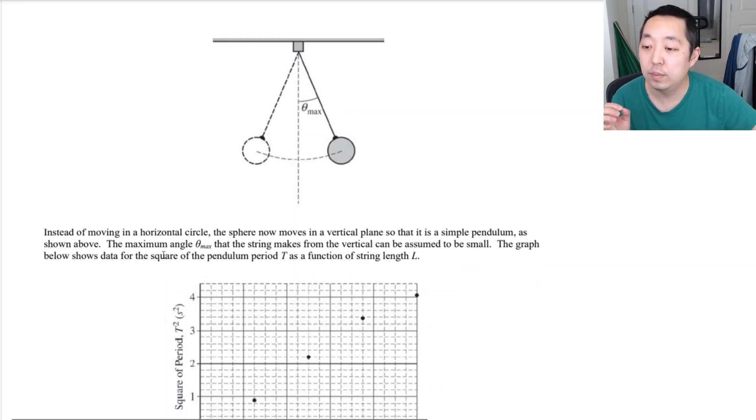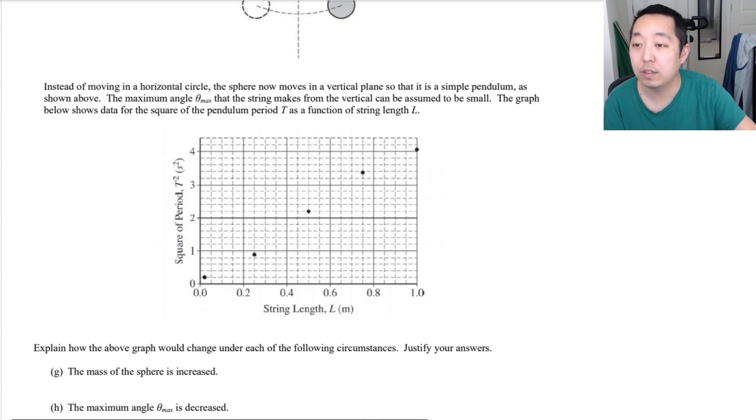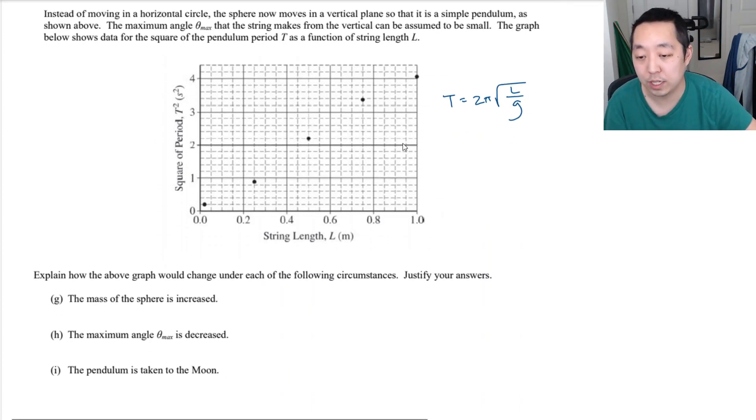Instead of moving in a horizontal circle, the sphere now makes a new move in a vertical plane. So, it's a simple pendulum. So, it's just swinging back and forth, simple harmonic motion. The maximum angle theta max of the string makes when the vertical can be assumed to be small. That's usually important. I don't know if you know this, but all your equations for harmonic motion, pendulums, especially the pendulum one, assumes that theta is about 15 degrees or smaller. If it's any larger than that, your equations are actually inaccurate. It's not simple harmonic motion anymore. The graph below shows data for the square of the pendulum period as a function of string length L. When I look at these graphs, I tend to have a relation. What do I expect it to look like? The equation that you should be thinking about is t is equal to 2 pi square root of L over G. Explain how the above graph would change under the following circumstances. Justify your answers. The mass of the sphere increases.